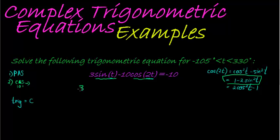So that this changes to 3 sin t minus 10. And this is going to change into 1 minus 2 sin squared t. So this is going to be minus 10 plus 20 sin squared t equal to negative 10.